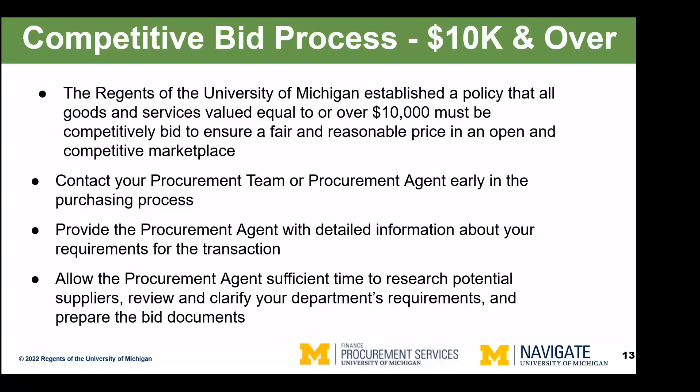Now let's talk about the competitive bid process — orders $10,000 and over. The University of Michigan has set its bid limit at $10,000, and the federal government has set the micro purchase threshold at $10,000 as well, so the university and federal government are aligned. The expectation is that all purchases of goods and services over $10,000 will be competitively bid, and that the bid process will be handled by procurement to ensure we comply with all various rules and regulations and maintain an open and competitive marketplace.